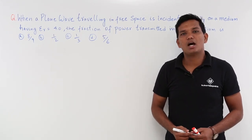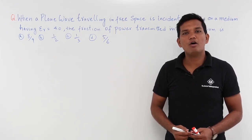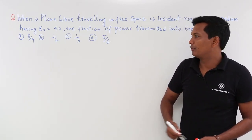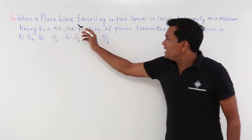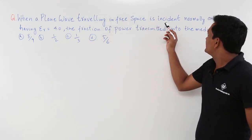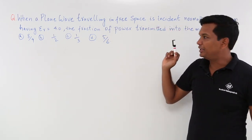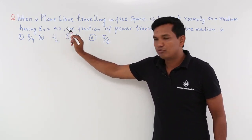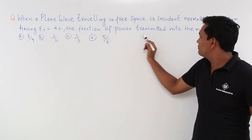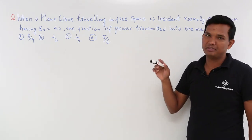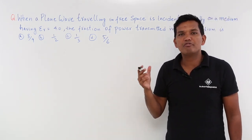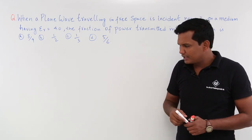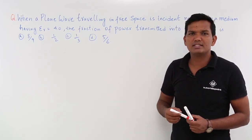In this class, we will discuss a problem of normal incidence. Let us see what is given in the problem. When a plane wave traveling in free space is incident normally on a medium having relative permittivity of 4, the fraction of power transmitted into the medium is what we have to find out.